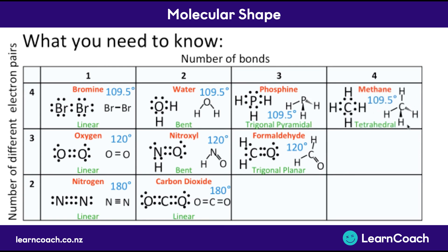For four bonds — for example methane — there are 109.5 degrees between all electron pairs, making a tetrahedral shape. It's like a triangle pyramid but with an extra stem out the top, called tetrahedral. Again, when drawing the diagram you need to show one bond coming out of the page as a wedge and one bond going into the page as a dashed line.